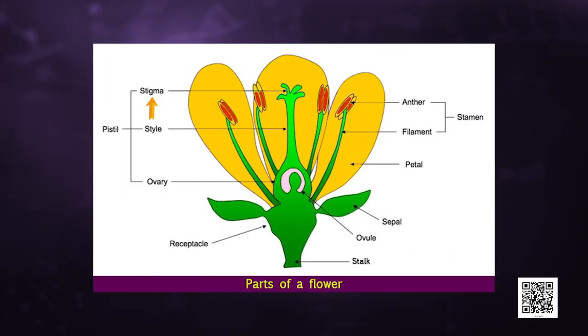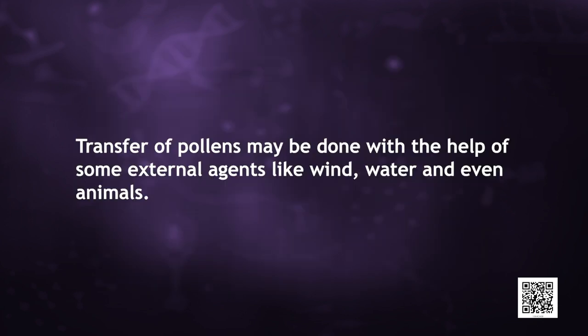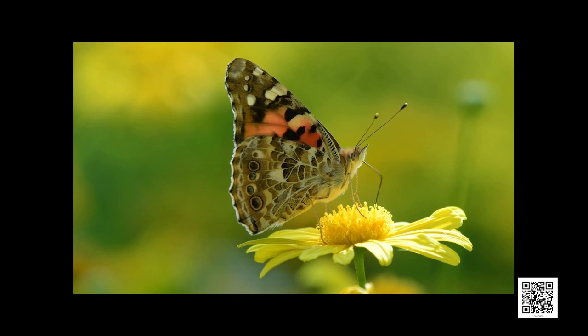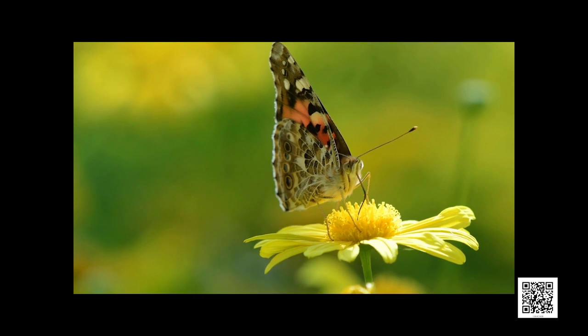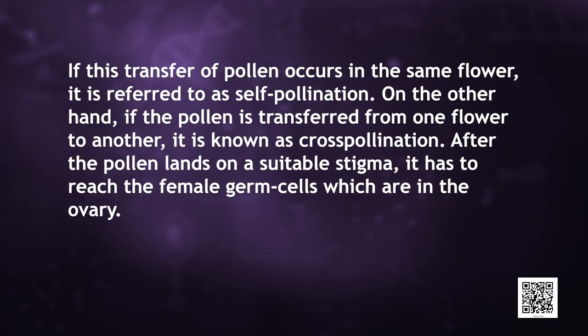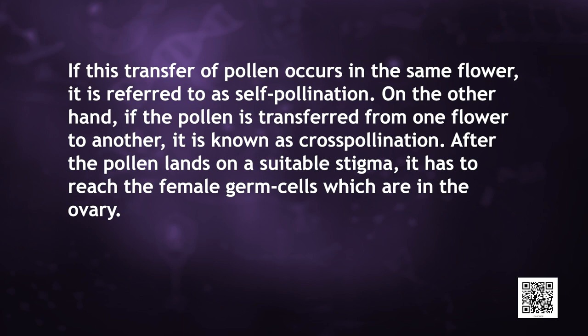The pollen needs to be transferred from the stamen to the stigma. The transfer of pollen may be done with the help of external agents like wind, water, and even animals. Butterflies are one of the best agents to transfer pollen from one flower to another. If this transfer of pollen occurs within the same flower, it is referred to as self-pollination. On the other hand, if pollen is transferred from one flower to another, it is known as cross-pollination.